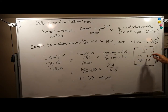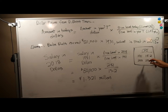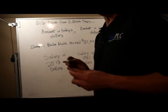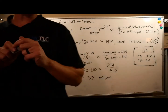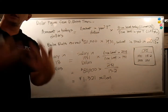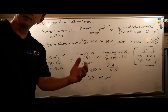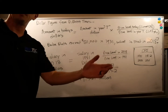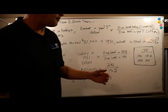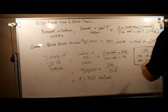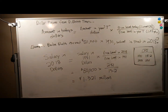In 1931 the CPI was 15.2, and in 2018 it was 251. Now you might think, wait a minute — I thought the base year was 100. Well, if you have a CPI score that is below 100, you're in a year that is before the base year. So the base year in here is going to be somewhere between 1931 and 2018, probably in the 1980s somewhere.